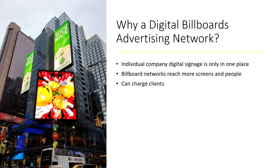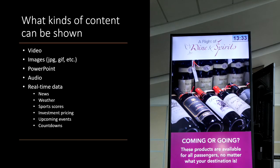You can rent space and put up screens anywhere, and you can charge clients accordingly when their ads are being displayed all over the city. As for content, you can show pretty much anything you can show on a computer: videos, images, JPEGs, GIFs, TIFFs, and other common image formats. You can show PowerPoints, audio if you have a speaker on the monitor, and real-time data such as news, weather, sports, investment pricing, upcoming events, and countdowns — a ton of information you simply could not show on a traditional billboard.